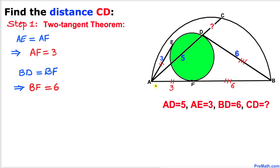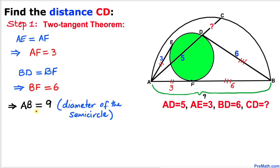Now let's find the length of line segment AB. This equals AF plus BF, which is 3 plus 6, equal to 9. Therefore line segment AB is 9 units, and this is also the diameter of the semicircle.